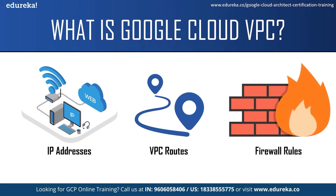Each VPC network implements a distributed virtual firewall that you can configure. Firewall rules allow you to control which packets can travel to which destination. They let you allow or deny connections to or from your virtual machine instances based on a configuration that you specify. When creating a VPC firewall rule, you must specify the VPC network and a set of configuration that defines what the rule does. The configuration enables you to target certain types of traffic based on the traffic protocol, destination port, sources and destination. You can create and modify VPC firewall rules using the Google Cloud console, gcloud command line tool, and REST APIs.